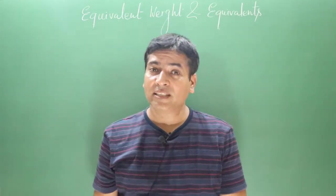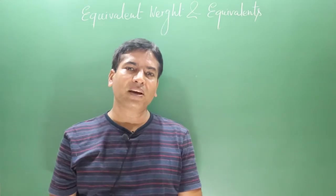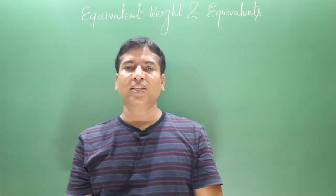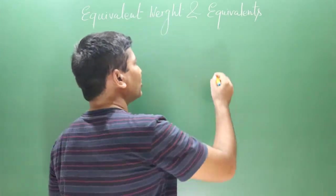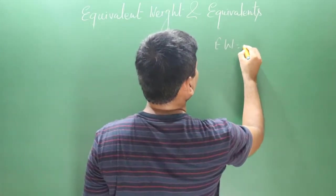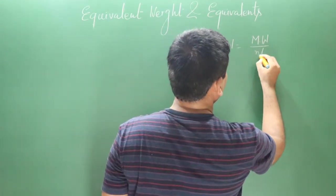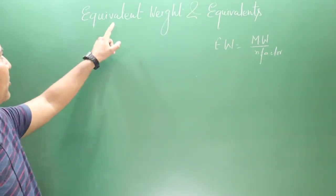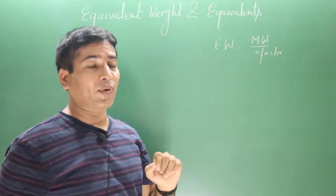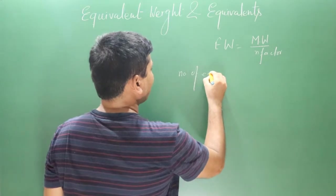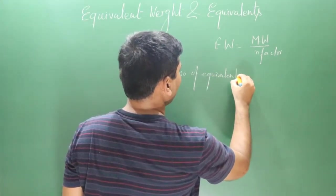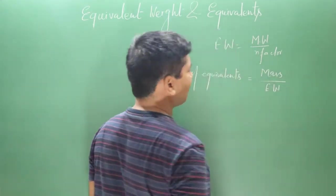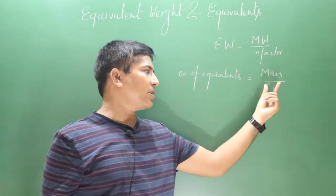In this lecture we will discuss equivalent weight and number of equivalents. In the previous lecture we learned about equivalent weight. The formula is: equivalent weight = molecular weight divided by n-factor. The relation for number of equivalents is: number of equivalents = mass of a given substance divided by equivalent weight.